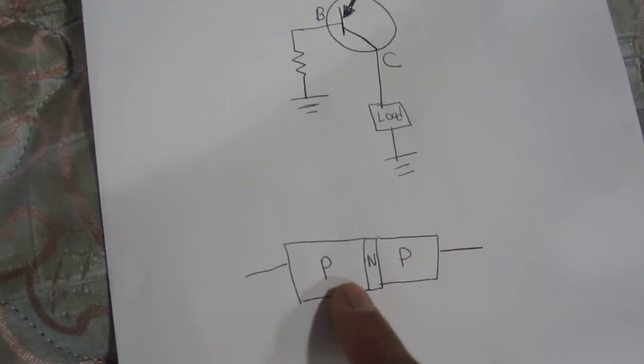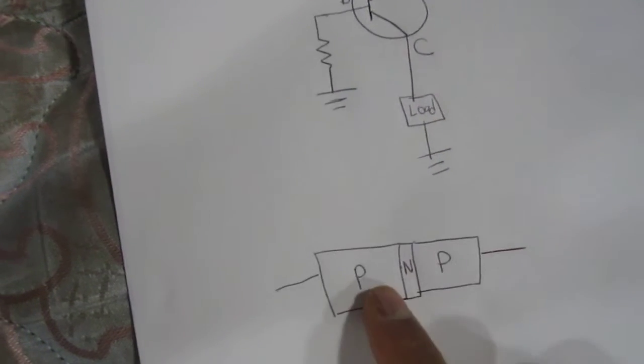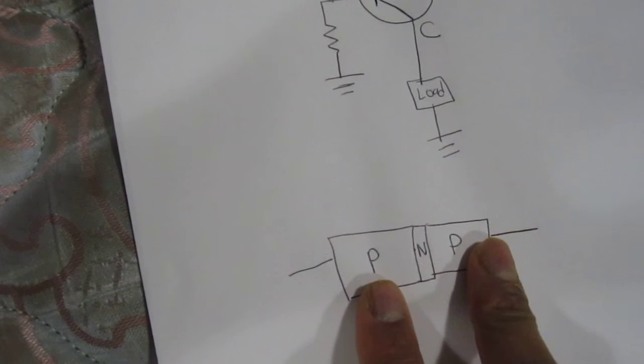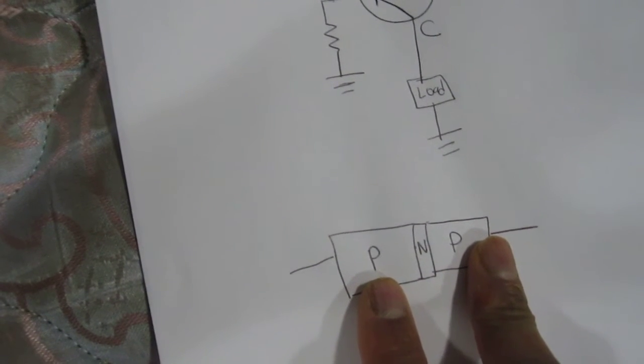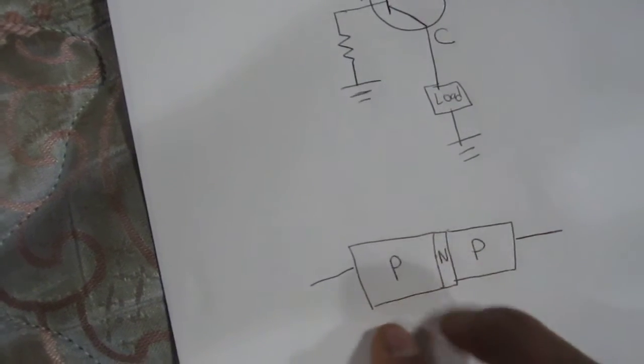This is how a PNP transistor is internally composed of two P regions and then sandwiched in an N region. Hence is why it's called PNP.